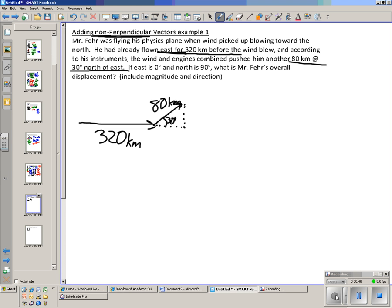In fact we can break it down into the x and y components of the right triangle. So let's go ahead and make our list here. We have 320 kilometers at zero degrees, that's using east is zero and north is 90, and we have 80 kilometers at 30 degrees.